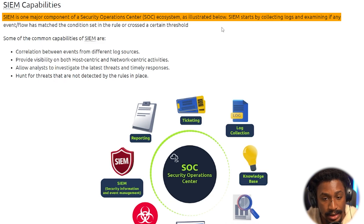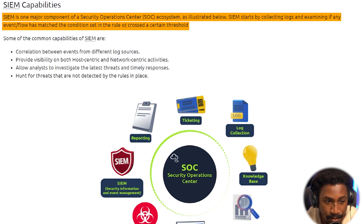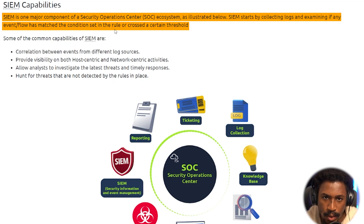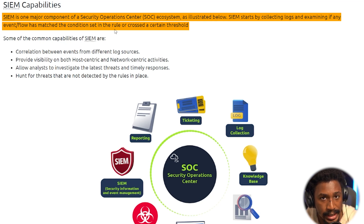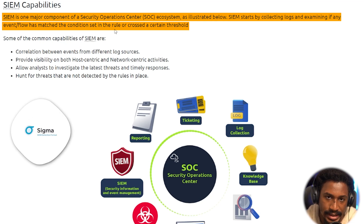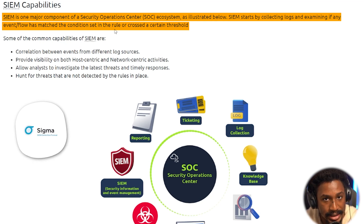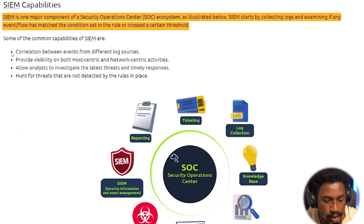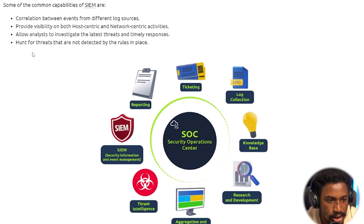SIEM is one of the major components of a security operations center ecosystem. The SIEM starts by collecting logs and examining if any event flow has matched the condition set in the rule or crossed a certain threshold. In the future, it would be cool to do a video where we actually look at creating detection rules with something like Sigma and look at what they mean by conditions and thresholds.